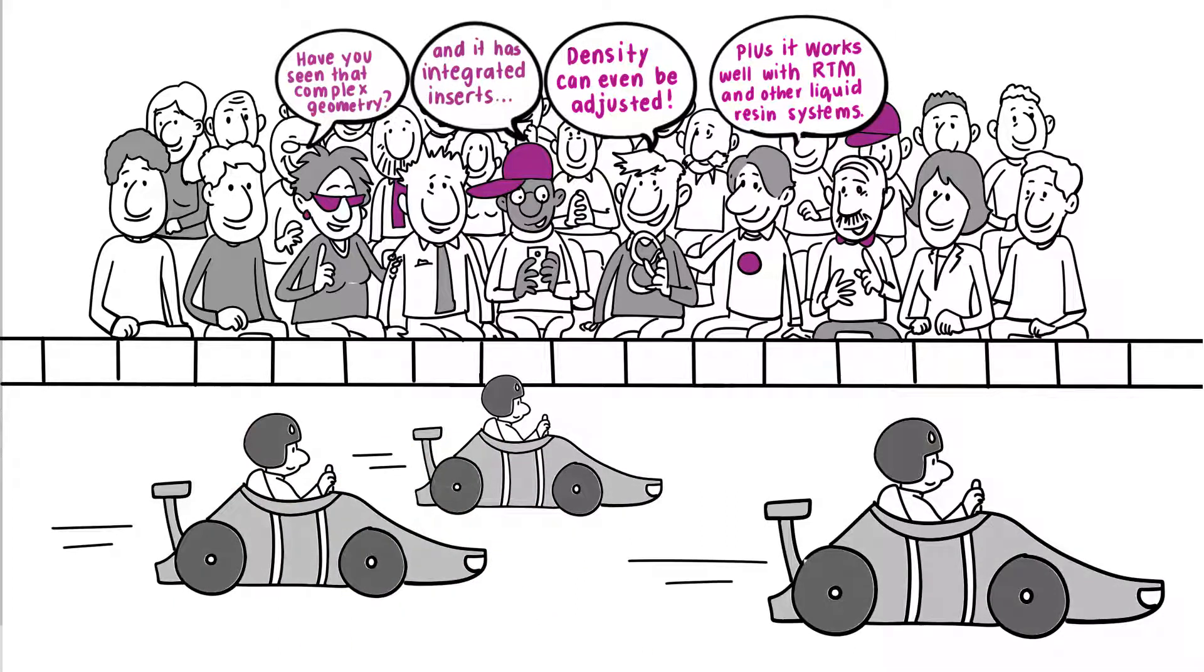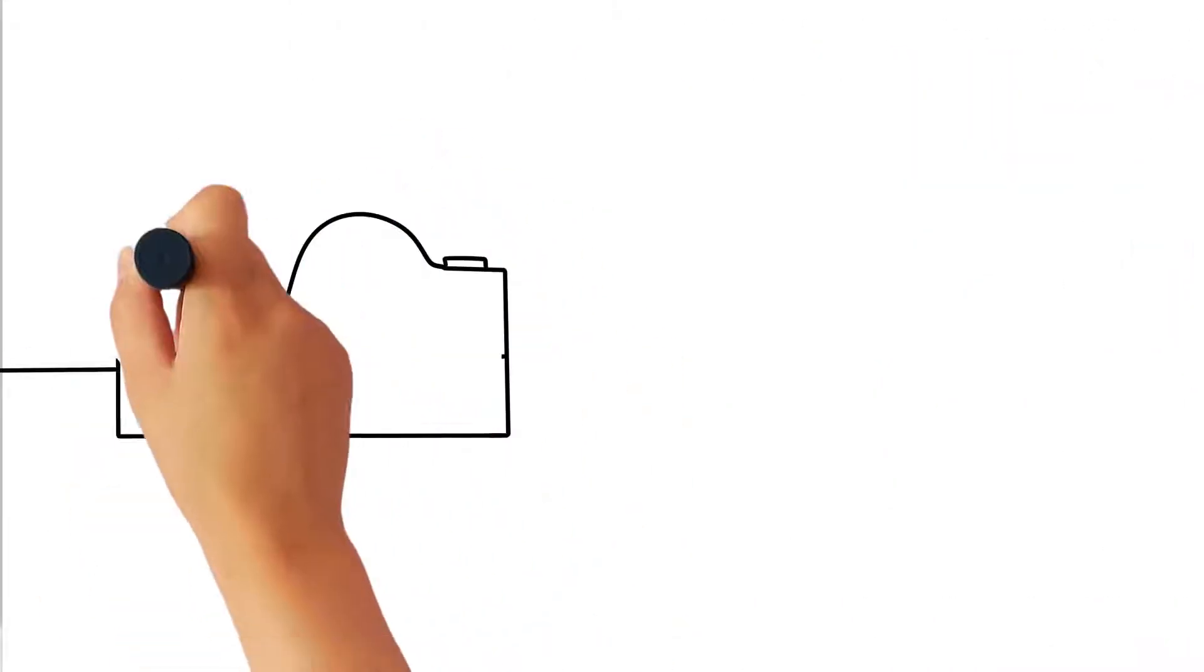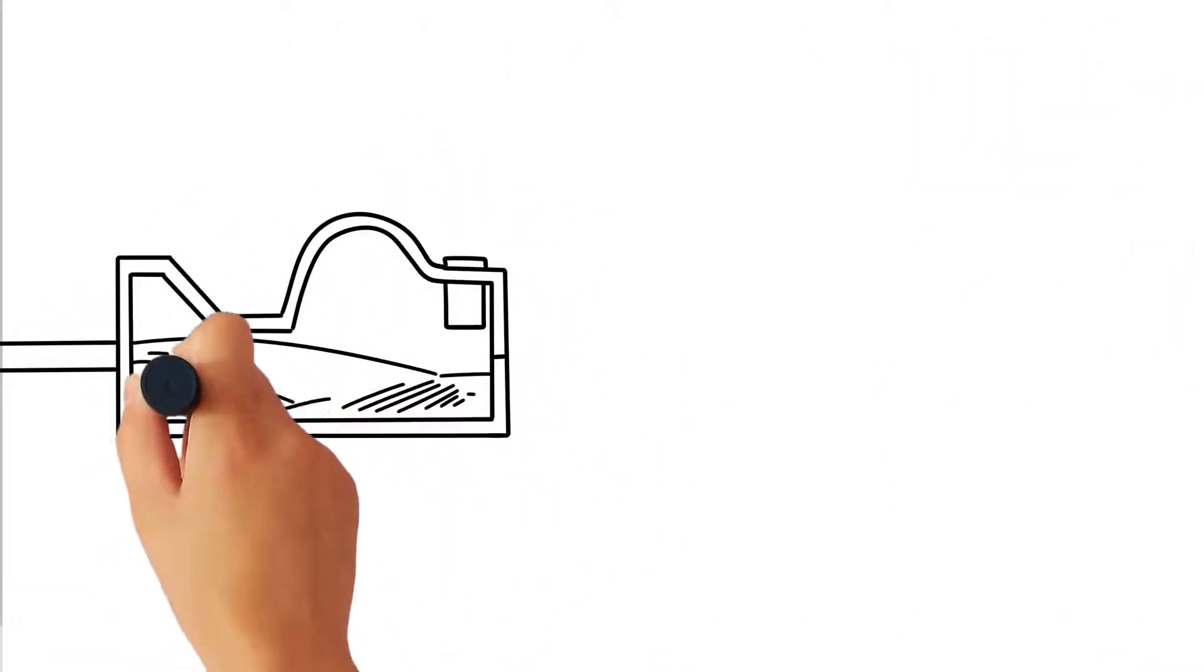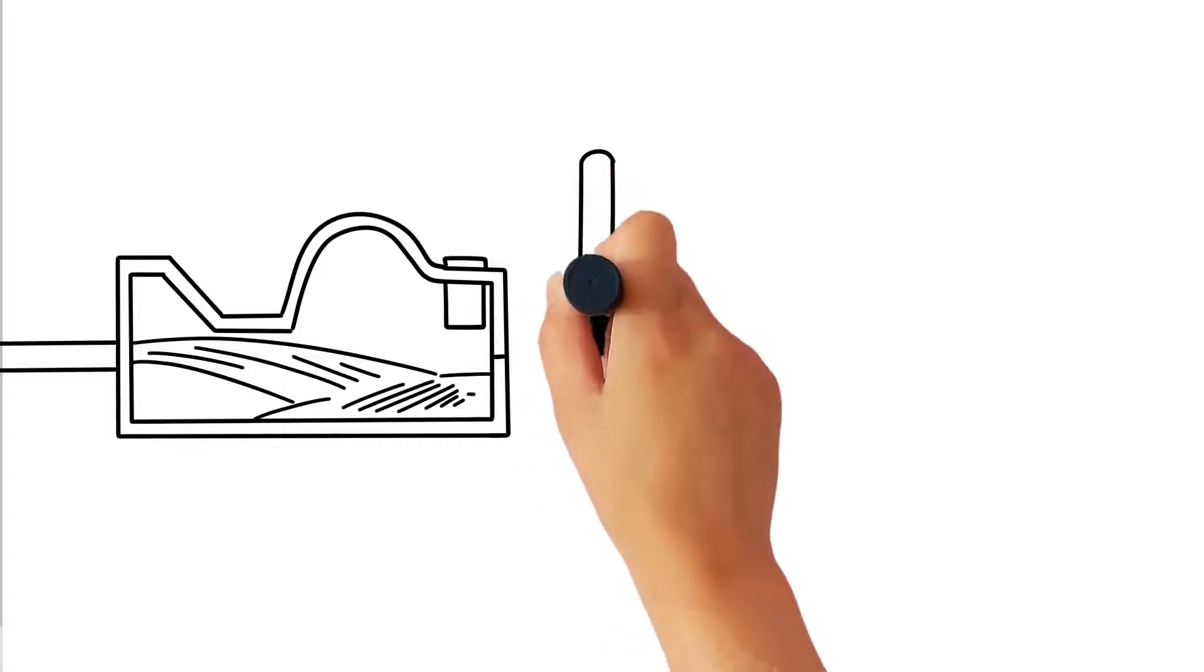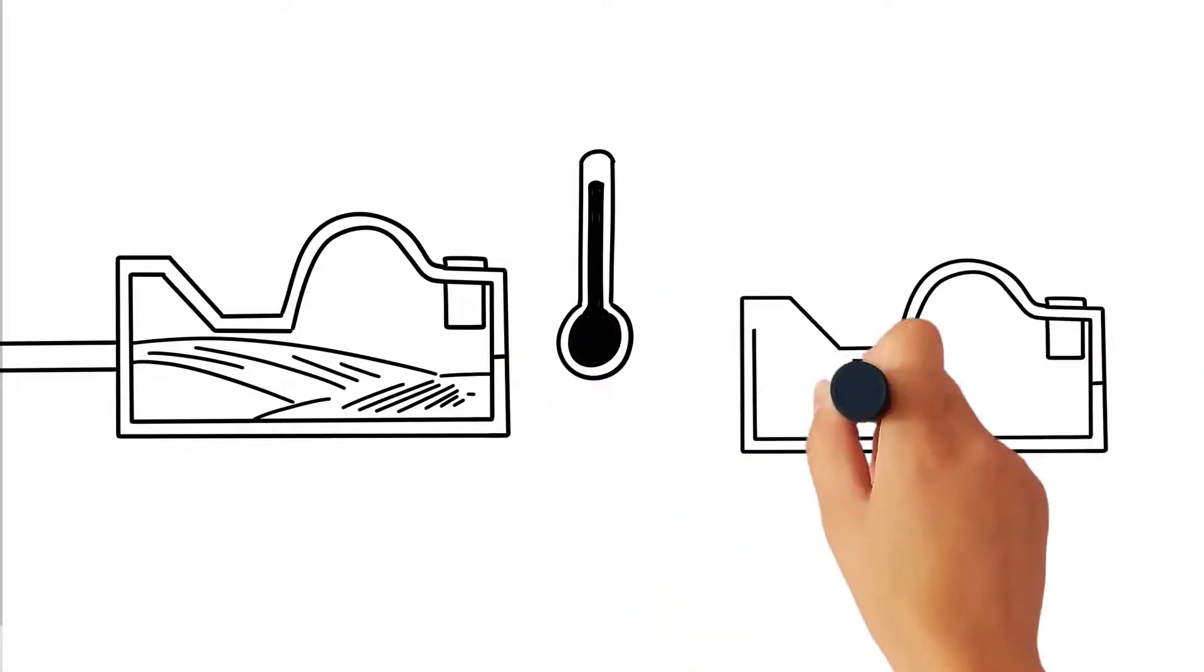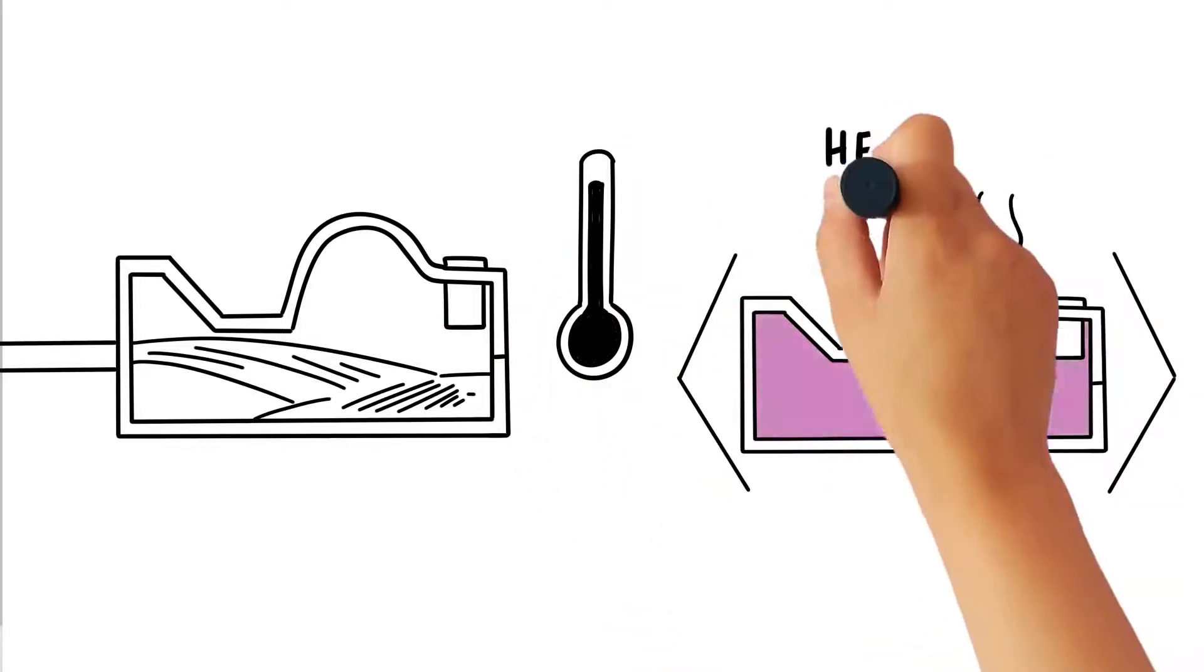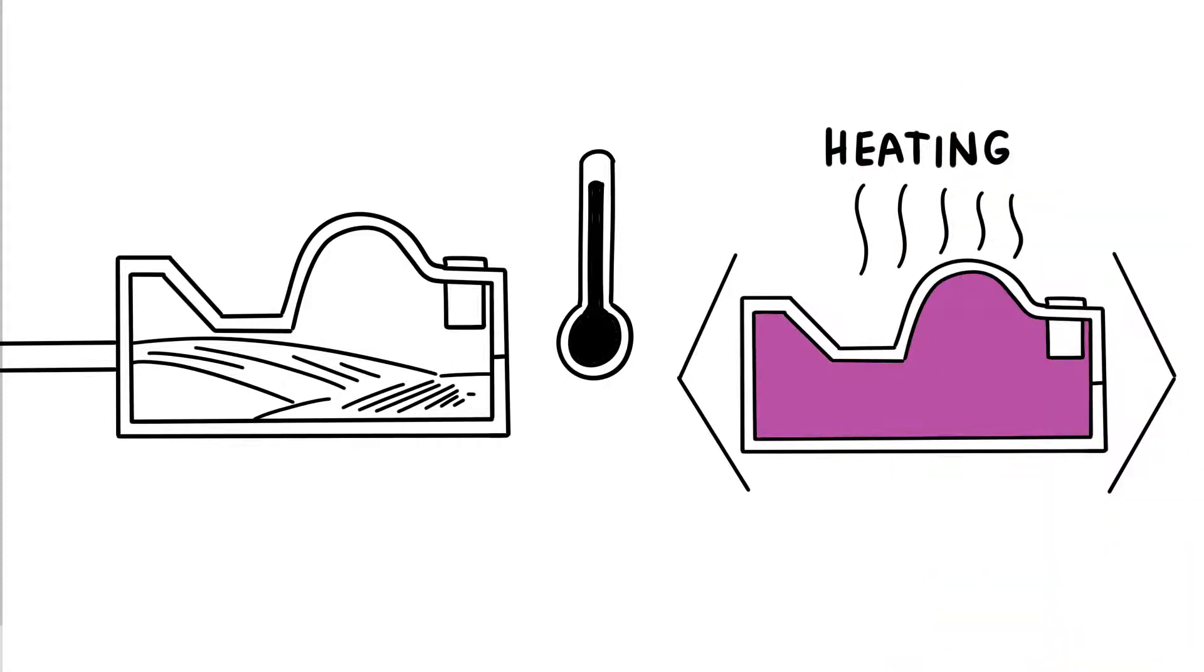Finished cores can include integrated inserts and density can be tailored to your requirements. Core geometrics that were previously only possible by CNC milling can now be efficiently produced inside a mold, with 100% material utilization. No dust mess or landfill waste.